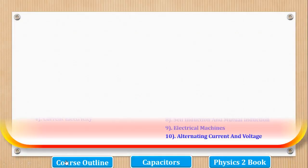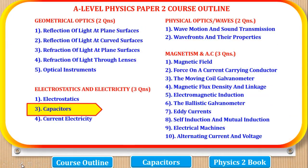So before we start, let's first look at the course outline. A-level physics paper 2 is divided into 4 parts. The first part is geometrical optics, where two questions come from these topics and a student is expected to answer one. So this is compulsory, you must answer one question from that part.